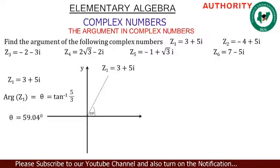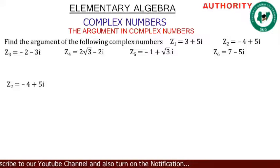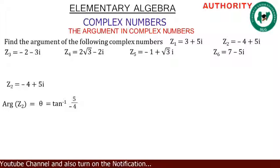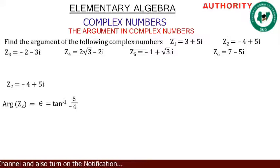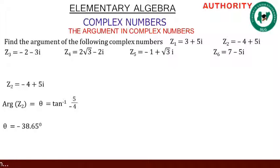For z2 = -4 + 5i: arg(z2) = θ = tan⁻¹(5 / -4), which gives us -38.65°.